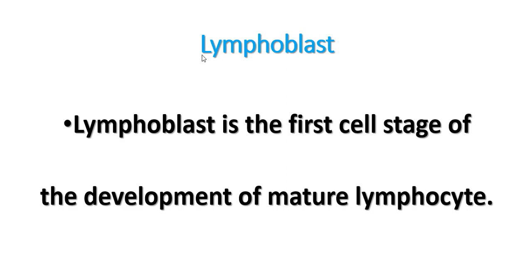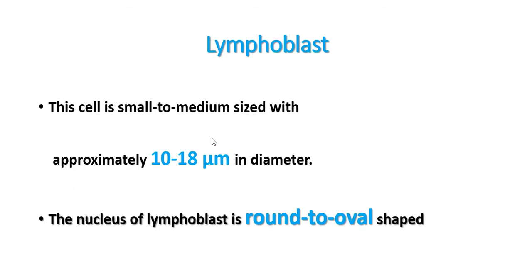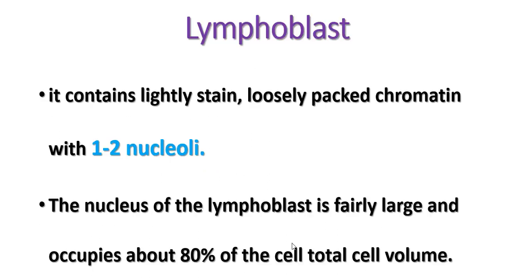The lymphoblast is the first stage of development of a mature lymphocyte. Its size ranges from small to medium, approximately 10 to 18 micrometers, and its shape is round to oval. It contains a lightly stained nucleus with loosely packed chromatin, and within the chromatin, one or two nucleoli are also present.